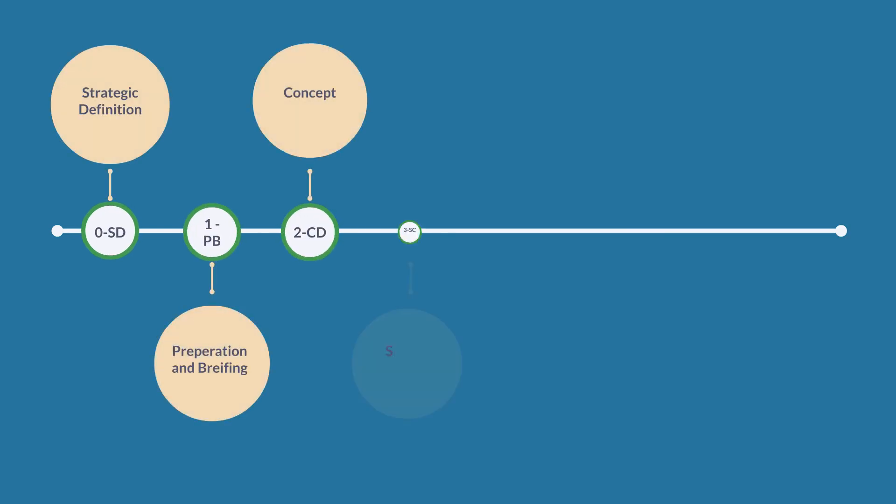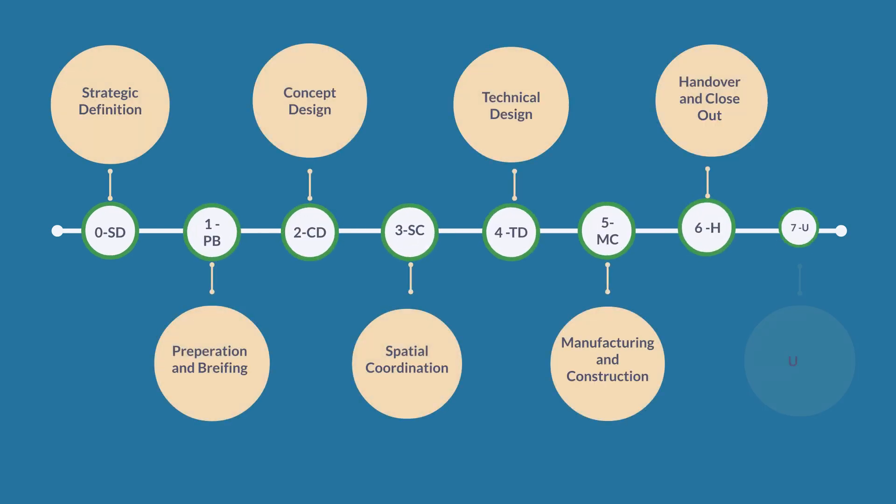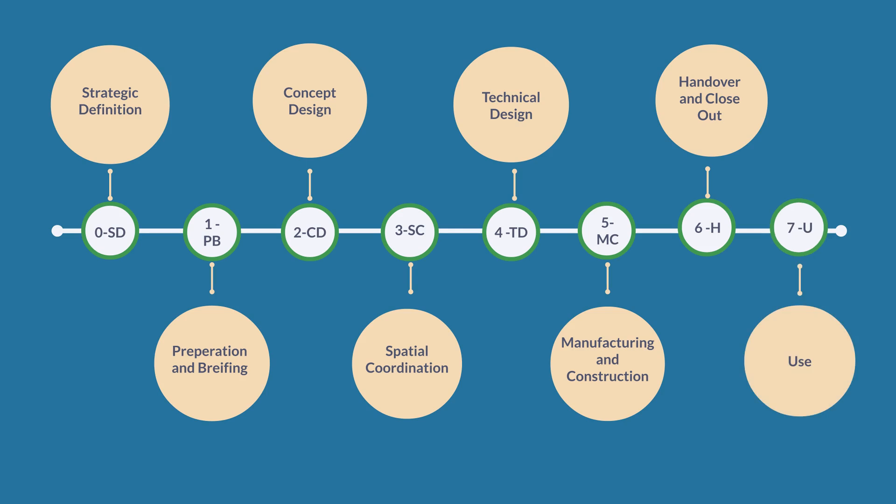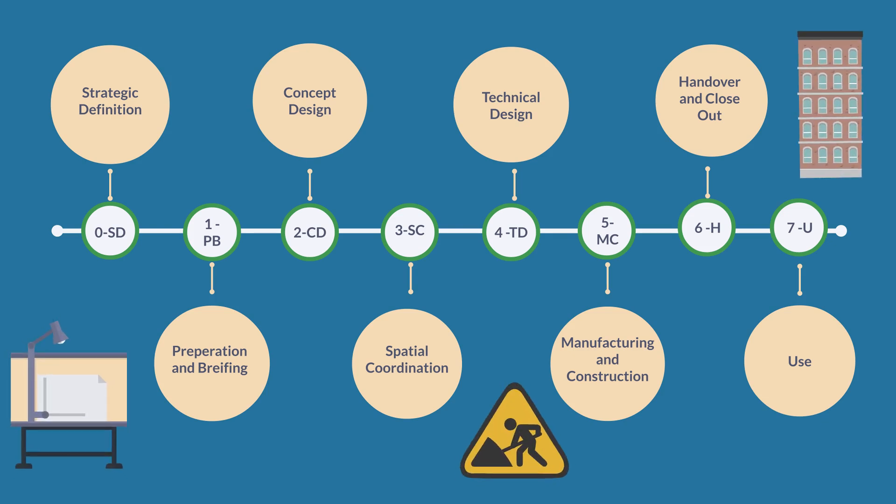I'm going to use the eight RIBA Plan of Work stages to break down the different roles of a Quantity Surveyor throughout the project lifecycle. The RIBA Plan of Works accounts for all chapters of a construction project, from the initial idea to construction and day-to-day usage of the build.